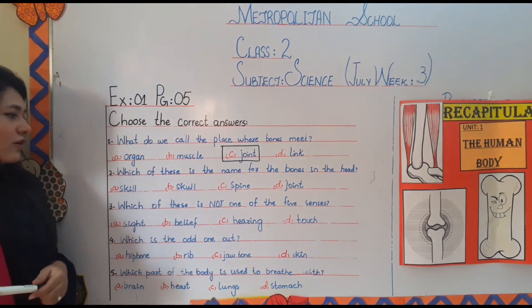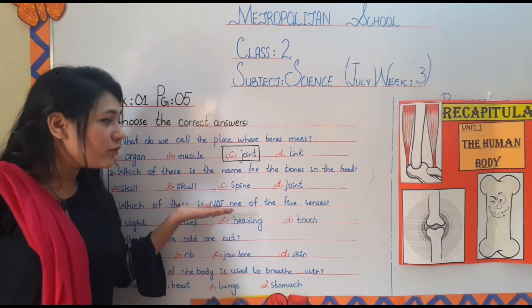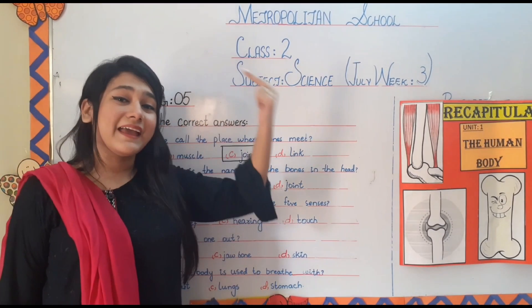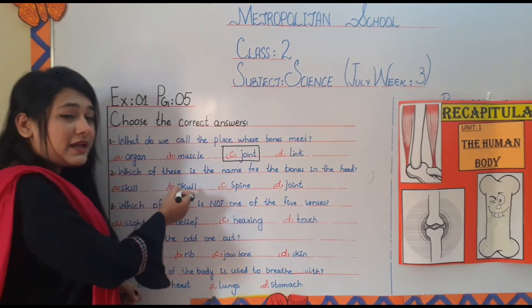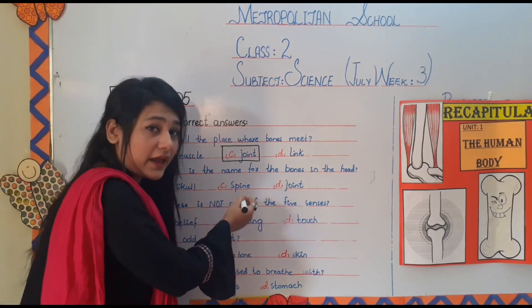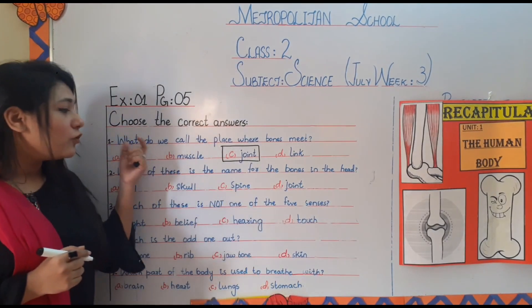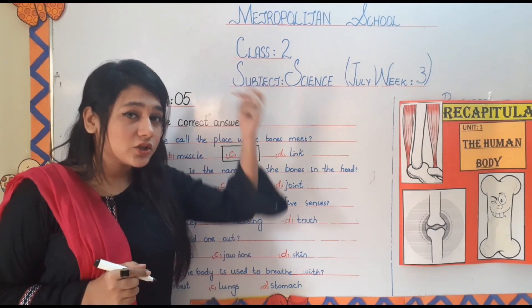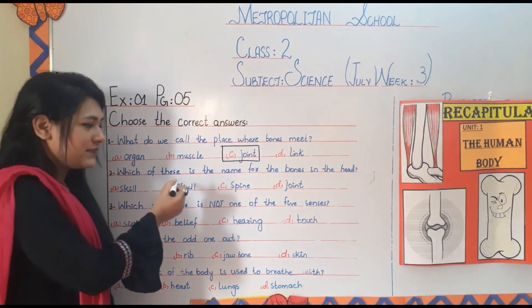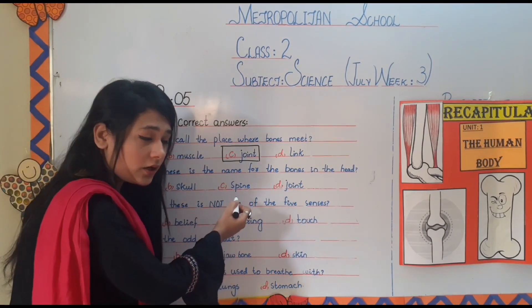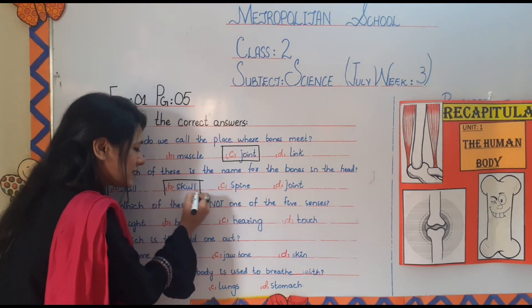Number two: which of these is the name for the bones in the head? The options are skull, spine, or joint. What is the name of the bone in the head? The answer is skull.